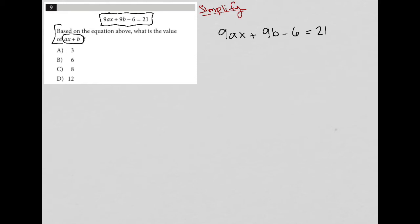How would I get AX + B? I see that those variables are contained here. I also see that each of those terms, the 9AX and the 9B, have a common factor of 9.